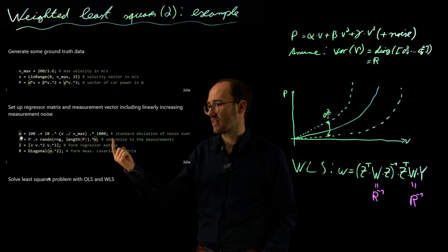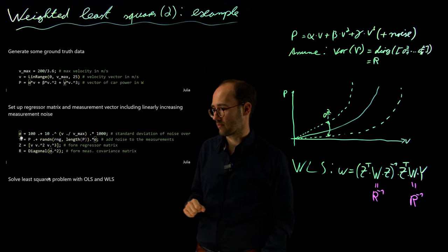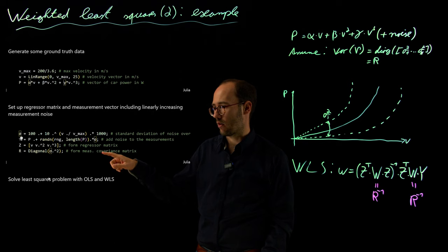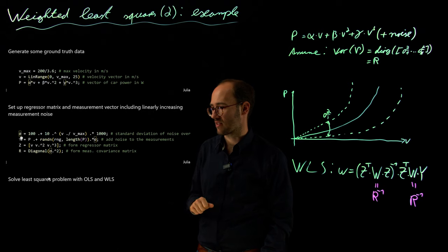And then we set up our regression problem. But here with this model approach which we also see here that depending on the speed, the noise basically is here increasing over time, right? And accordingly our weighting matrix is here, or not our weighting matrix but our covariance matrix is designed here accordingly.